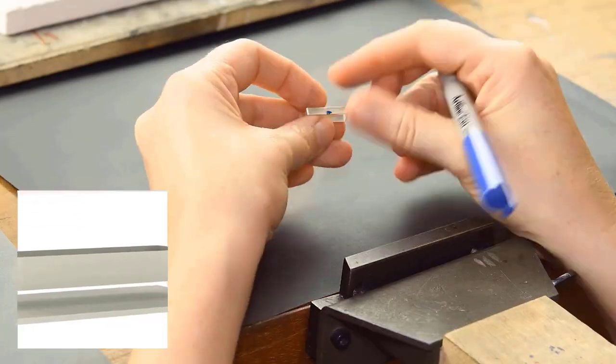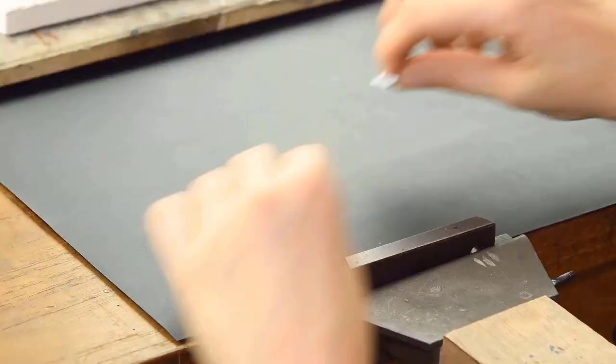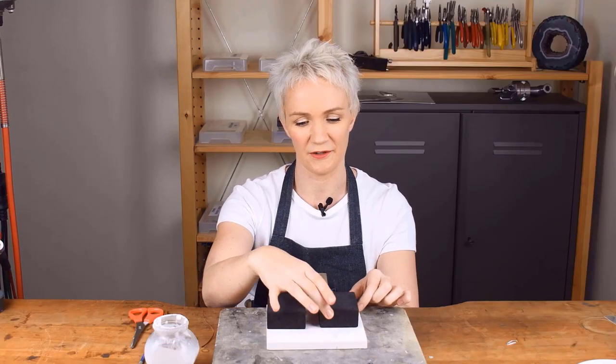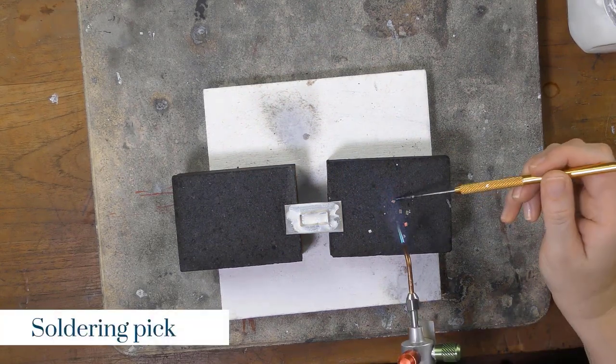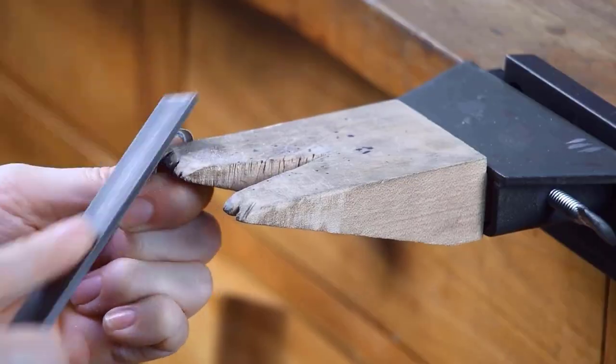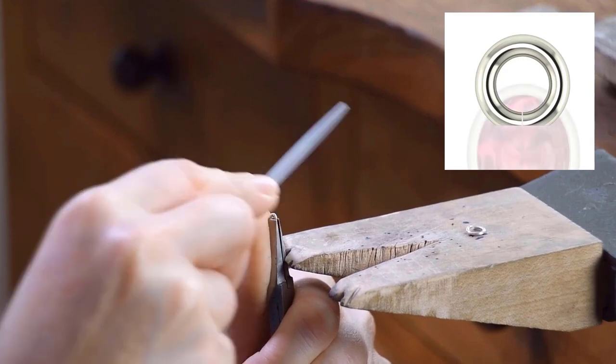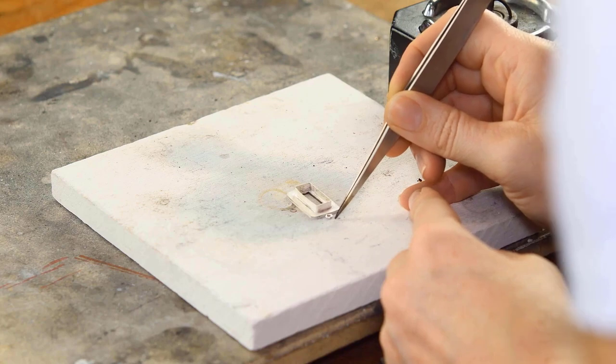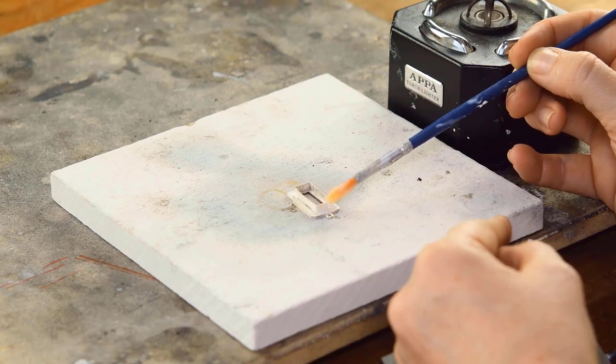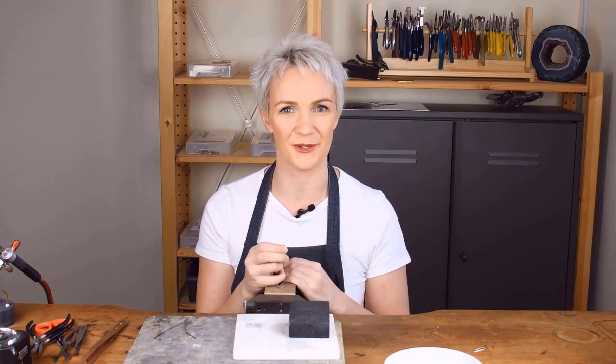This is to make sure when we solder it to the bezel that we've got a really strong connection. Let's take a look at soldering on the jump rings to the bezel without a border.